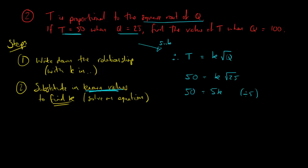So 50 equals 5k. I'll divide both sides by 5, and I'll get k is equal to 10. That's step 2 done. I know k. This is unlocking the question for me. I can write down the equation now.